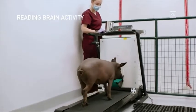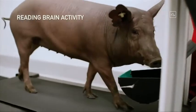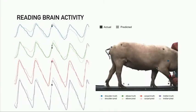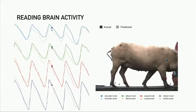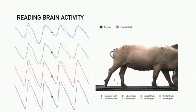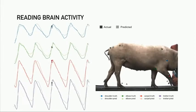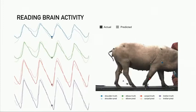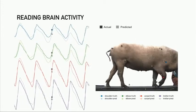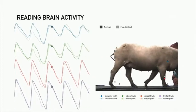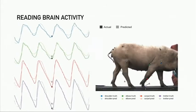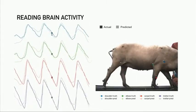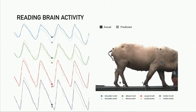In terms of additional brain reading activity, when we have one of our pigs on a treadmill - it's a funny concept really - we take the readings from the neurons and we try to predict the position of the joints. So we have the predicted position of the joints, and then we measure the actual position of the joints. You can see that they're almost exactly aligned. So we're able, with a wireless neural implant, to actually predict the position of all of the limbs in the pig's body with very high accuracy.